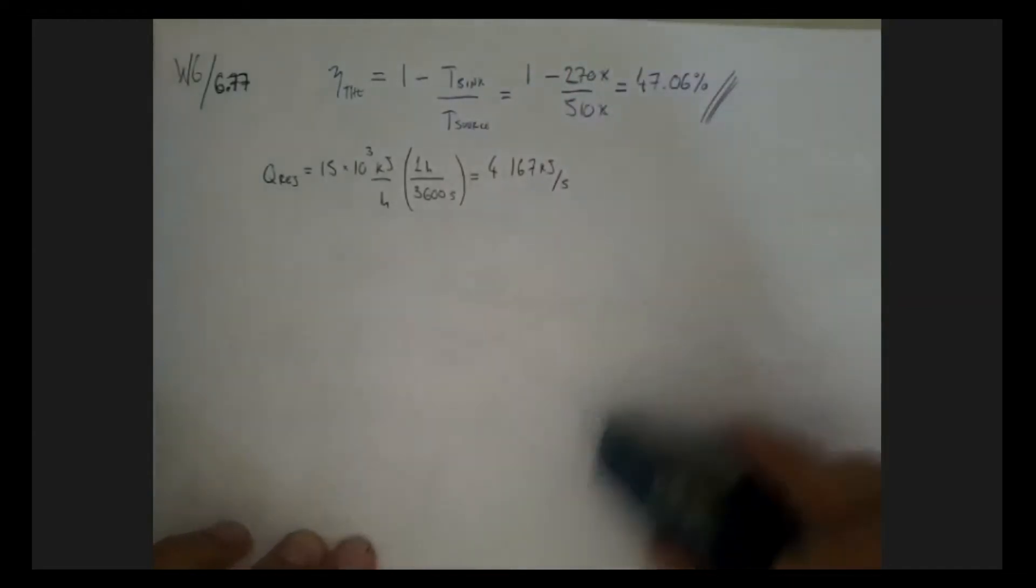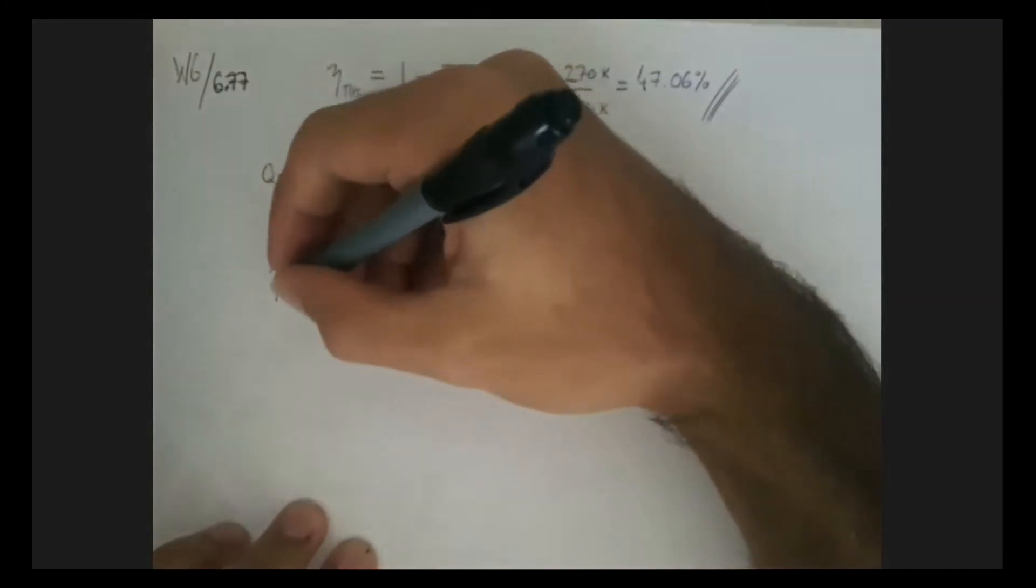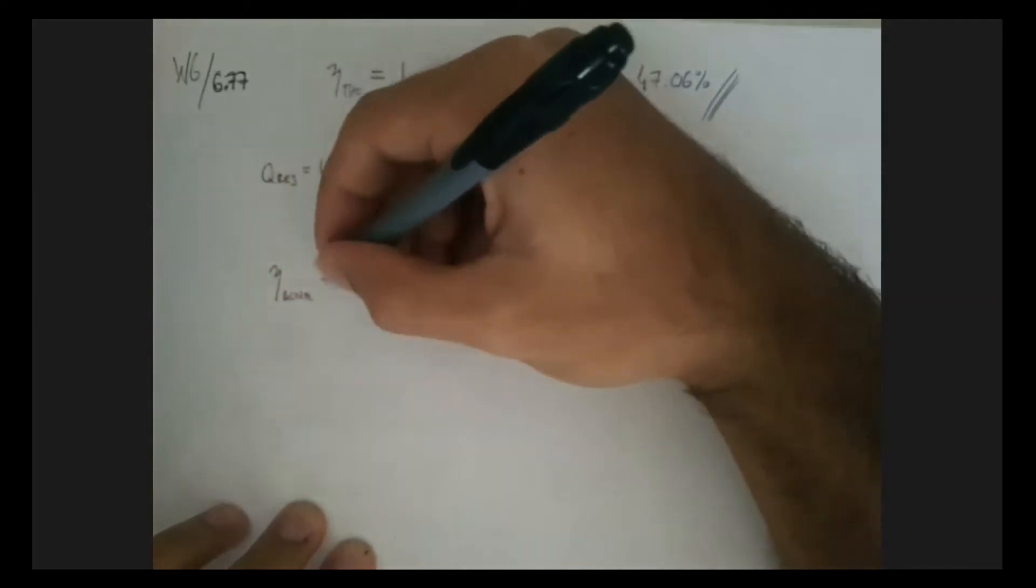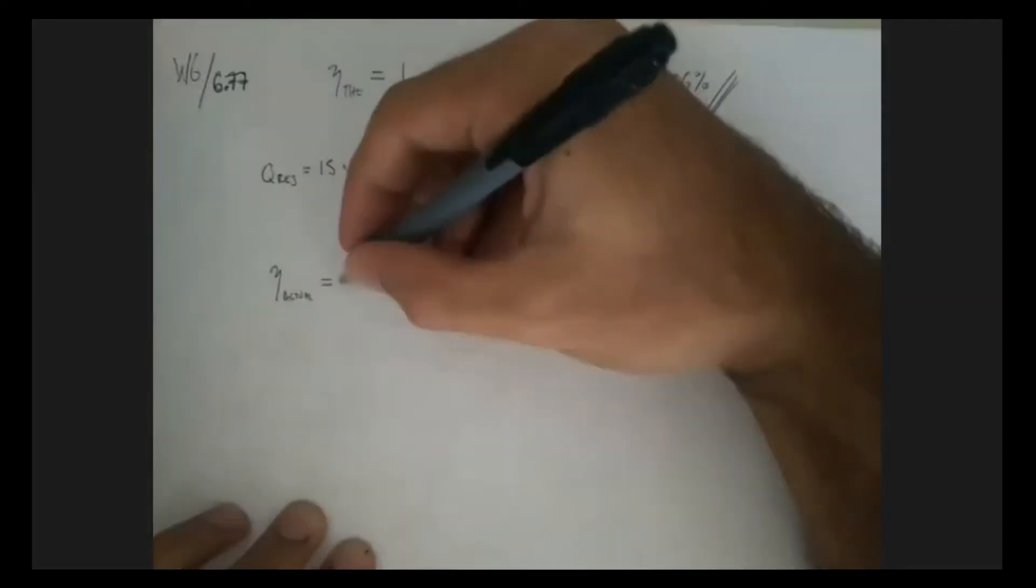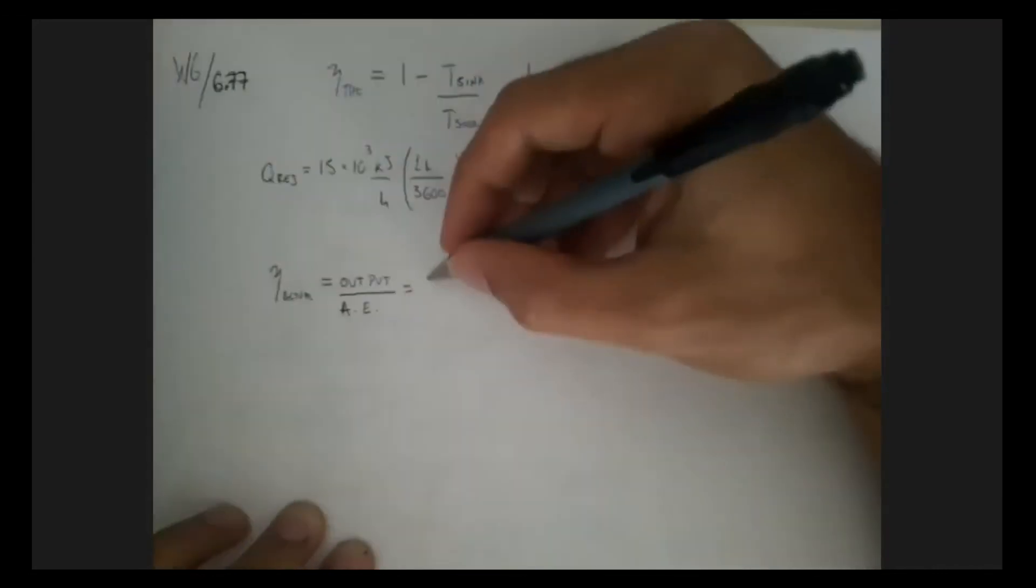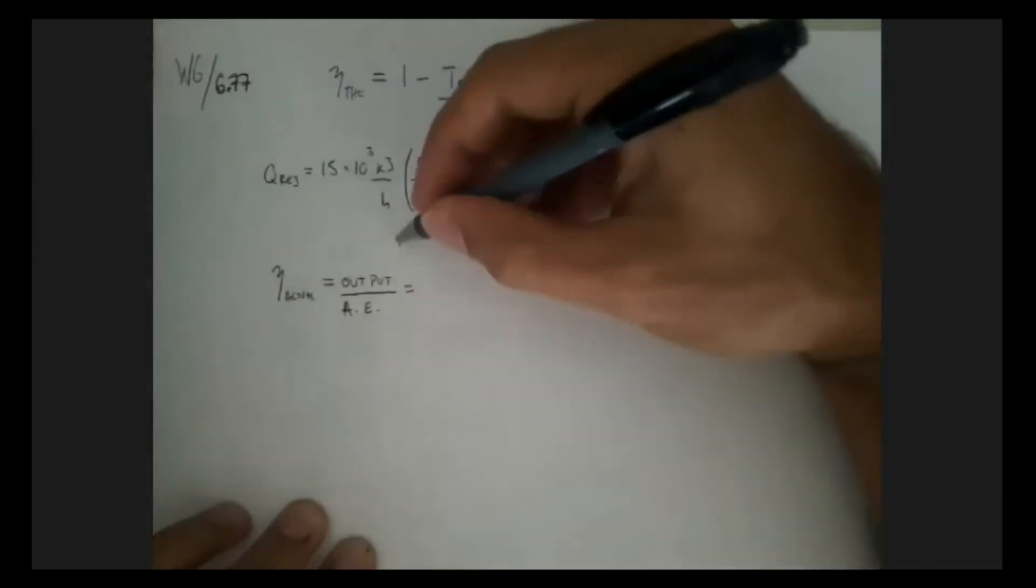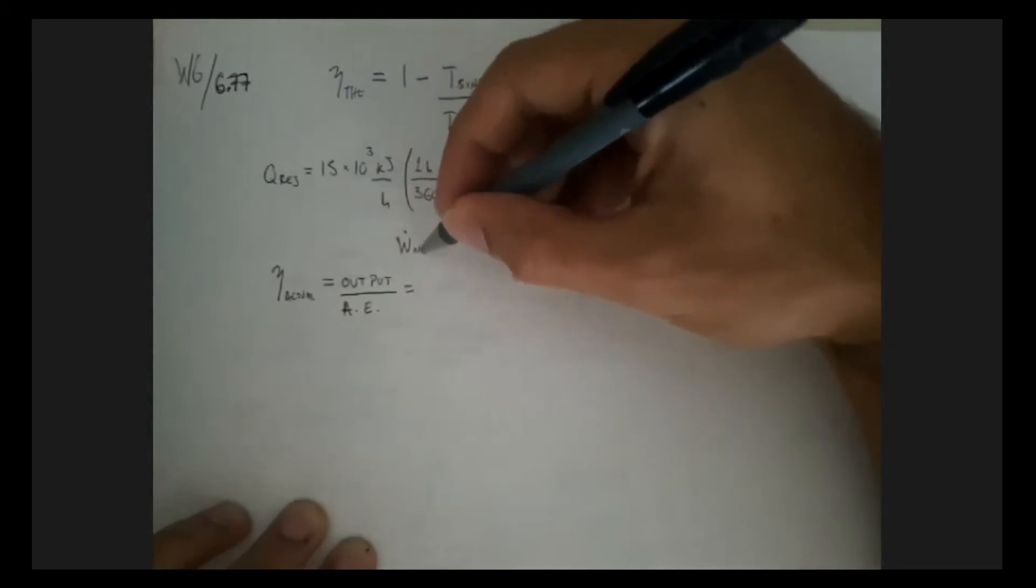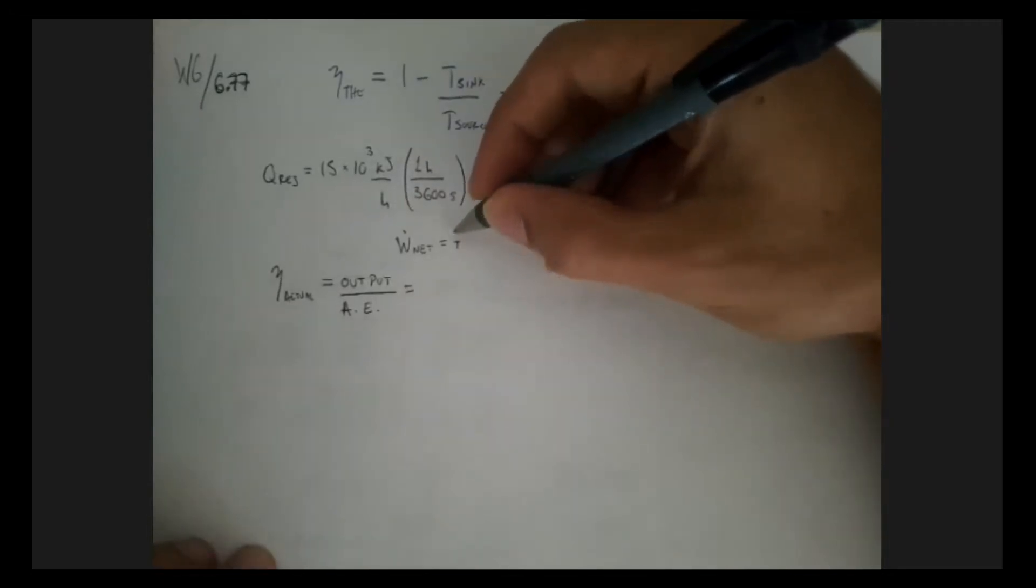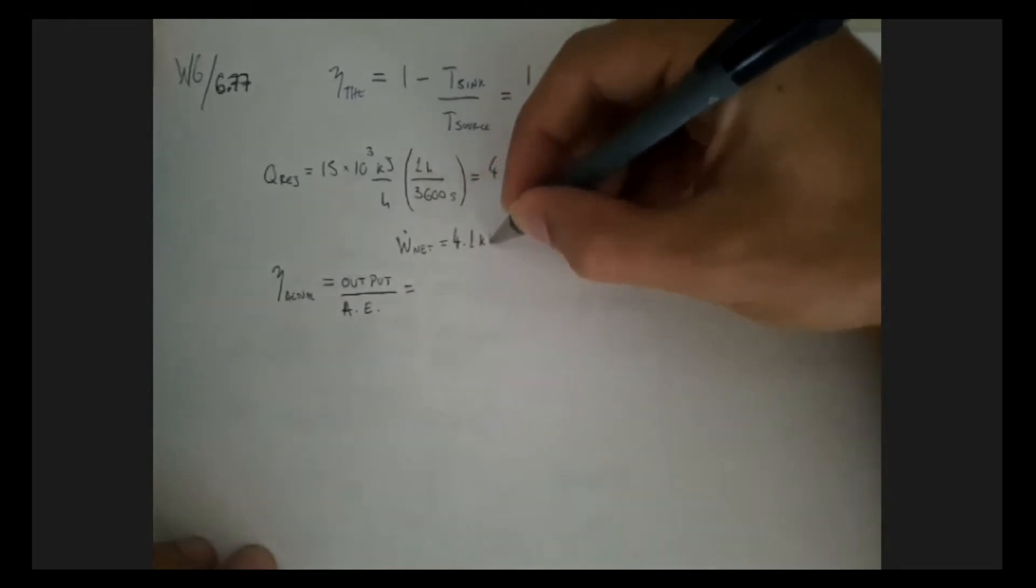So let's see what's the efficiency that this thing would have. So let's call it actual, according to his claims. Well, that's going to be the output over the available energy, or the input. Available energy, AE. So the useful energy got out of it is the work, and it's given as, what was it, 4.1 kilowatts.